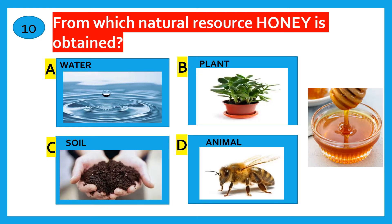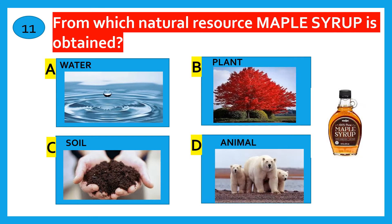From which natural source is honey obtained? Water, land, soil, animal. The correct answer is animal.